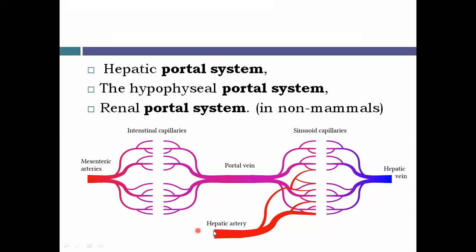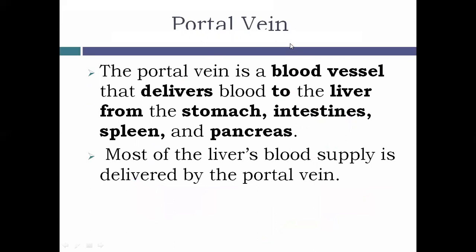In the hepatic portal system, blood flow begins from capillaries, passes through the portal vein, and ends in the capillaries in the liver. The portal vein is an important venous channel that delivers blood to the liver from the stomach, intestine, spleen, and pancreas. Most of the liver's blood supply comes from this portal vein, not the hepatic artery.